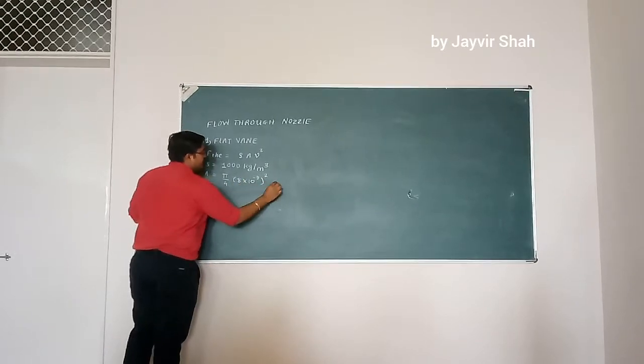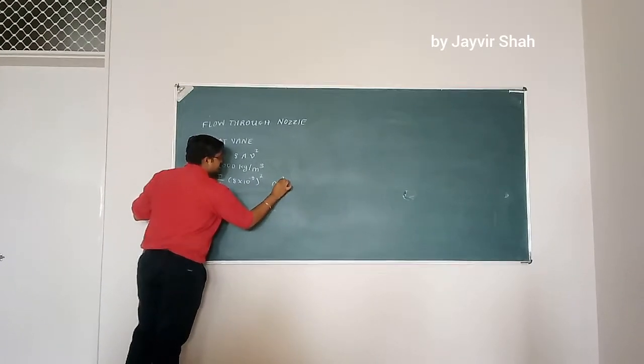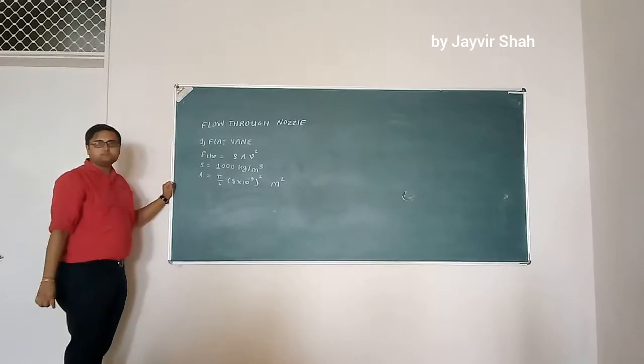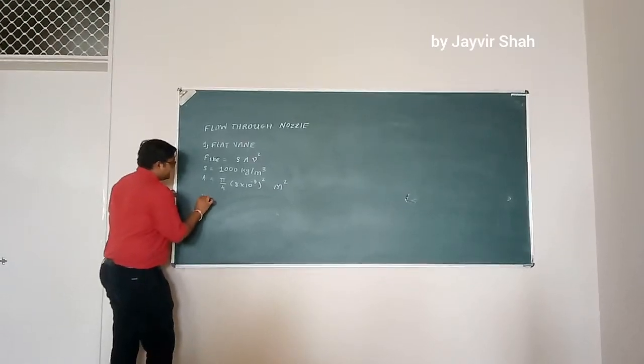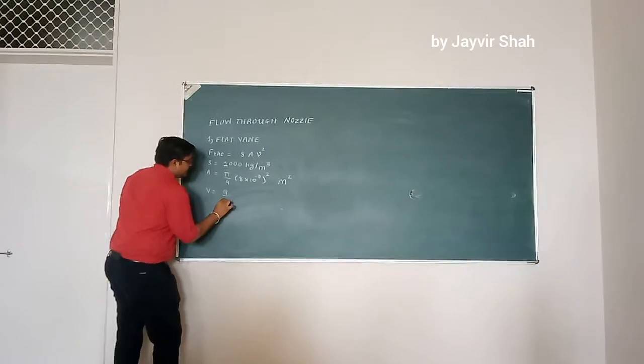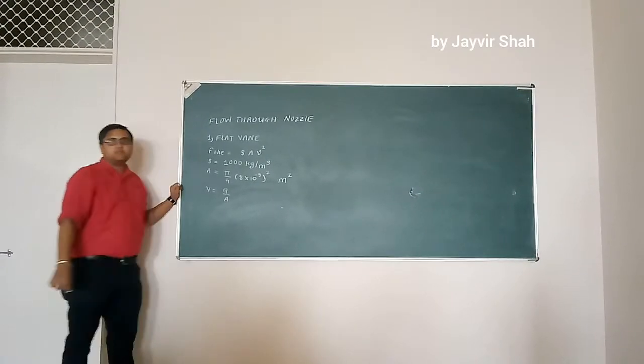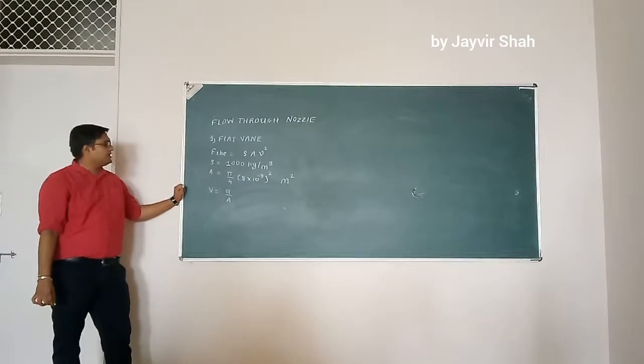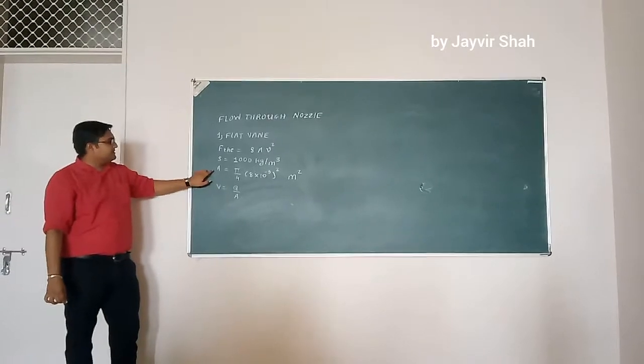π/4 D² and its unit is meter square. And velocity can be found out by using this equation: Q divided by A, the continuity equation. Where area is same.